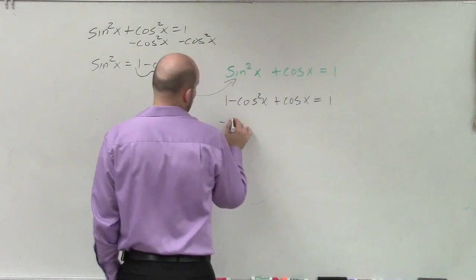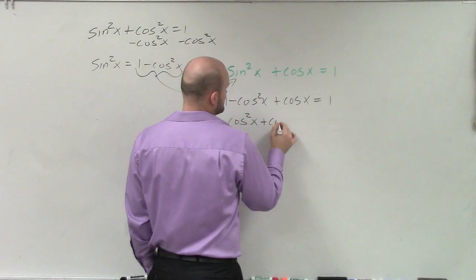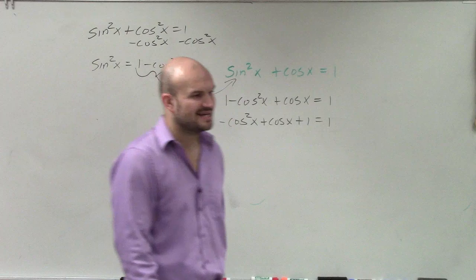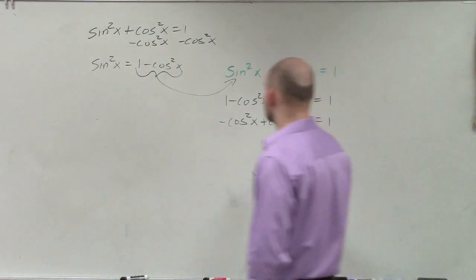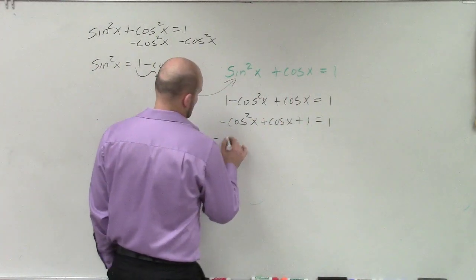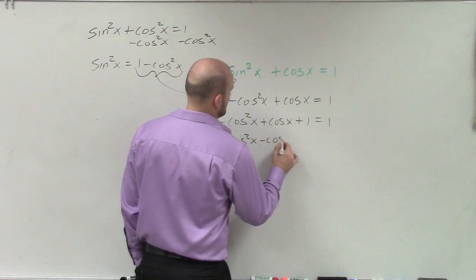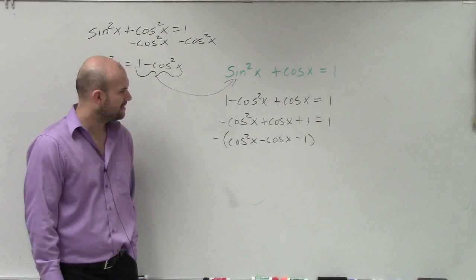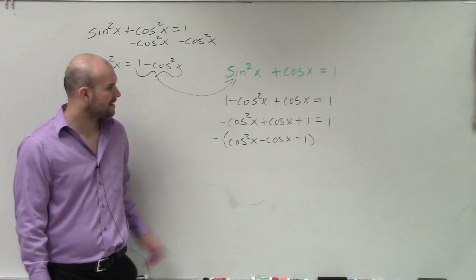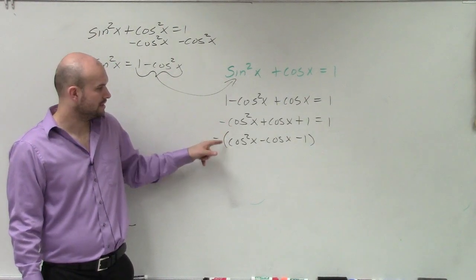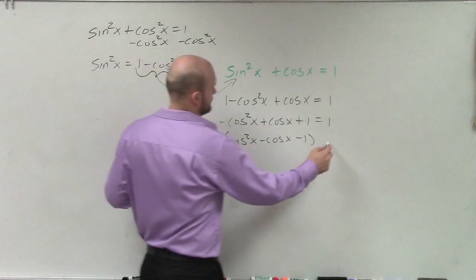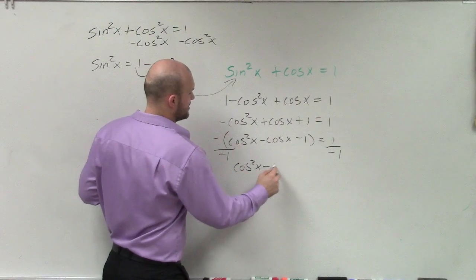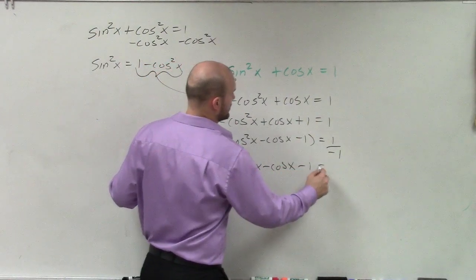So now, I have negative cosine squared of x plus cosine of x plus one equals one. All right? Now, in this case, I don't really want to factor with a negative one. So what I'm going to do is I'll factor that out. I factor out the negative one. And then, I can divide by negative one. So now, I have cosine squared of x minus cosine of x minus one equals negative one.